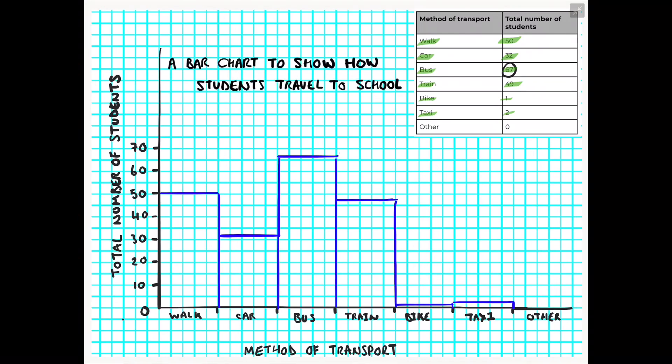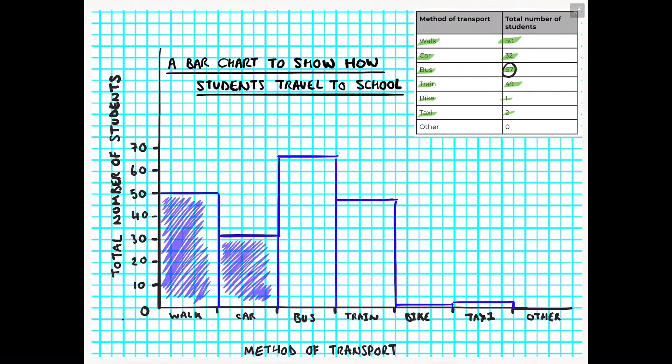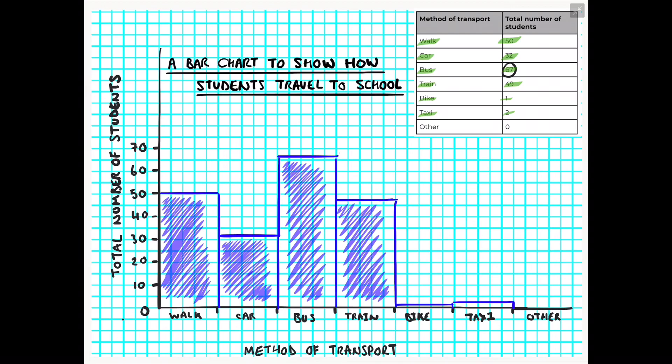To finish off your bar chart, always give it a nice clear title so everyone can understand what data you have presented. You also might want to go the extra mile and actually shade in the bars. Please be mindful about the color or colors you pick. If you want to use multiple colors, it's not really advised to do that with a standard bar chart like this just showing one category of data.